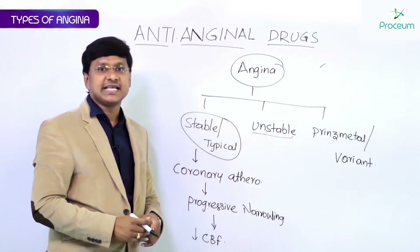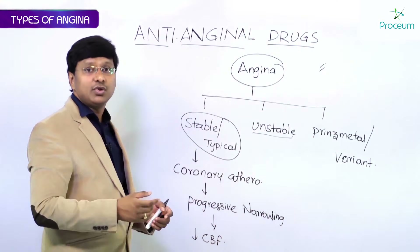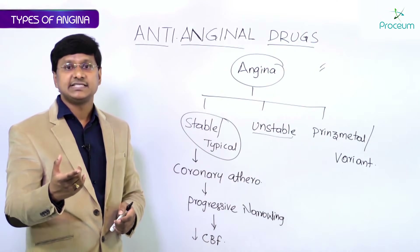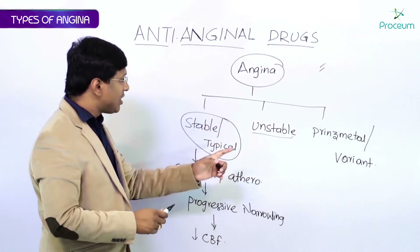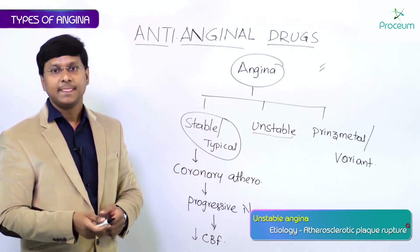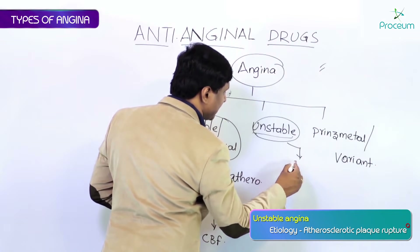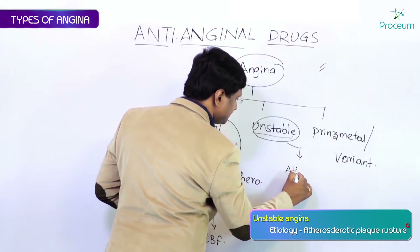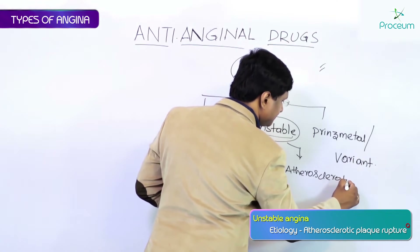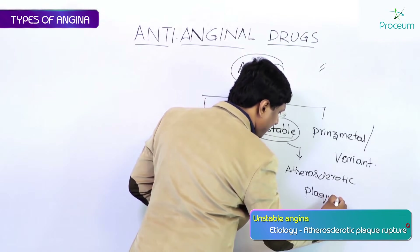Now let's look at the pathogenesis of unstable angina. In unstable angina, the individual will have chest pain or angina at rest itself. This is caused by atherosclerotic plaque rupture.